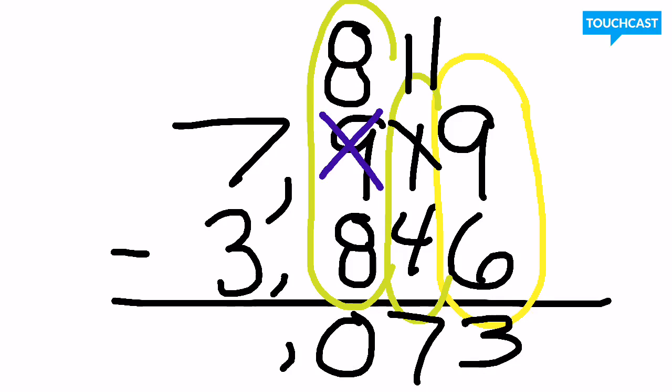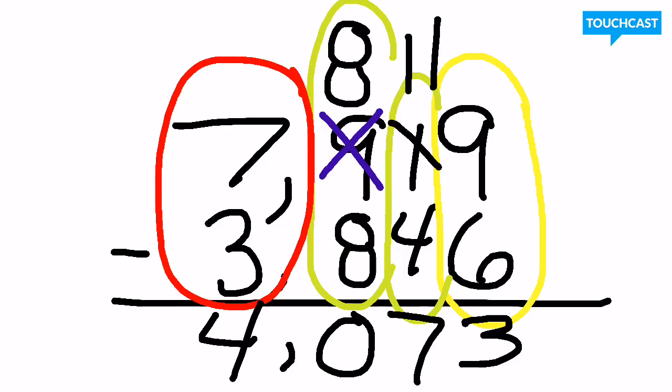Got to put your comma in there, and then we head on over to our thousands place, 7 minus 3. Once again we know what our math facts will give us: 4. So that brings an ultimate difference of 4,073.